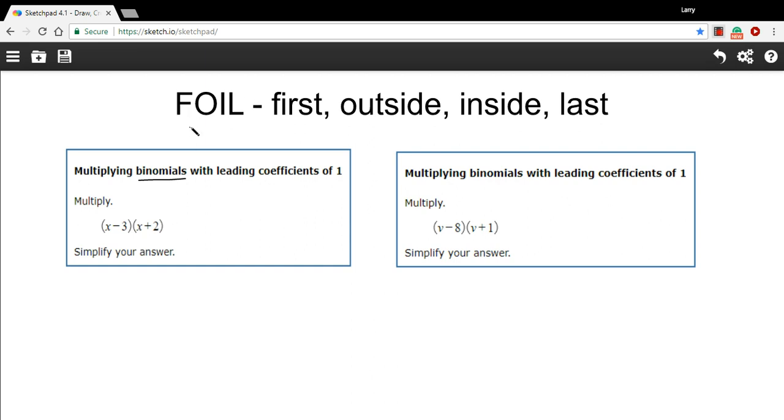Typically, we remember the method with this acronym FOIL. What FOIL says is you multiply together the first terms and then the outside terms and then the inside terms and then the last terms of each of these binomials. And then you add together and simplify the result.